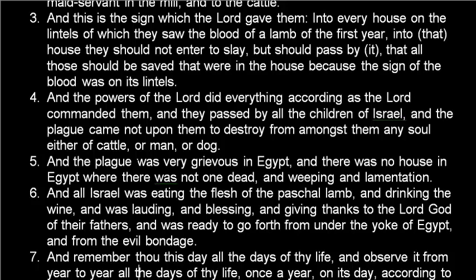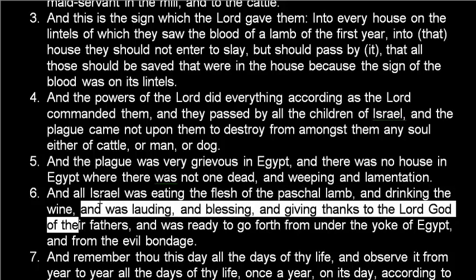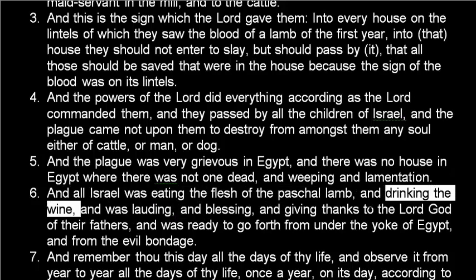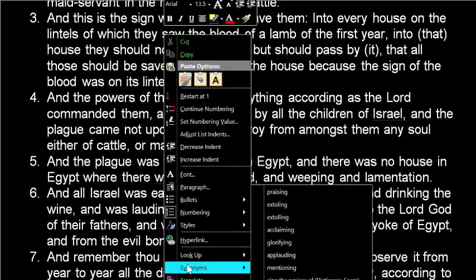Verse 5 says: 'The plague was very grievous in Egypt and there was no house in Egypt where there was not one dead and weeping and lamentation.' We're recognizing that this is a spiritual Egypt nowadays. Verse 6 says: 'And all Israel was eating the flesh of the paschal lamb and drinking the wine and was loud and blessing and giving thanks to the Lord God of their fathers and was ready to go forth from under the yoke of Egypt, from the evil bondage.' Something jumped out — they were drinking wine even back then; it wasn't just the lamb and the unleavened bread.